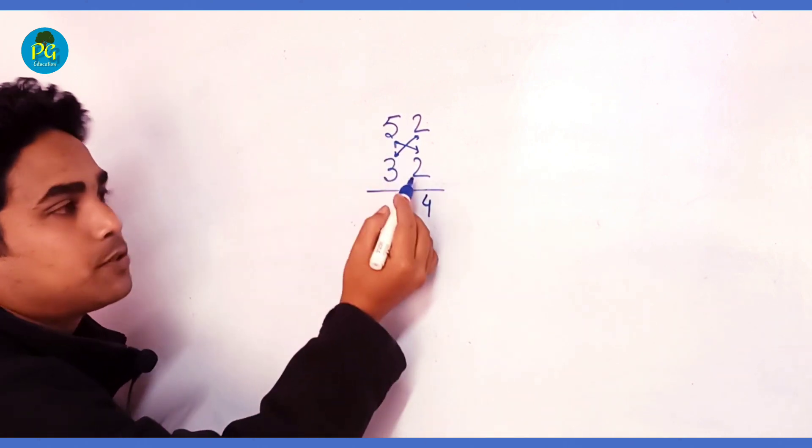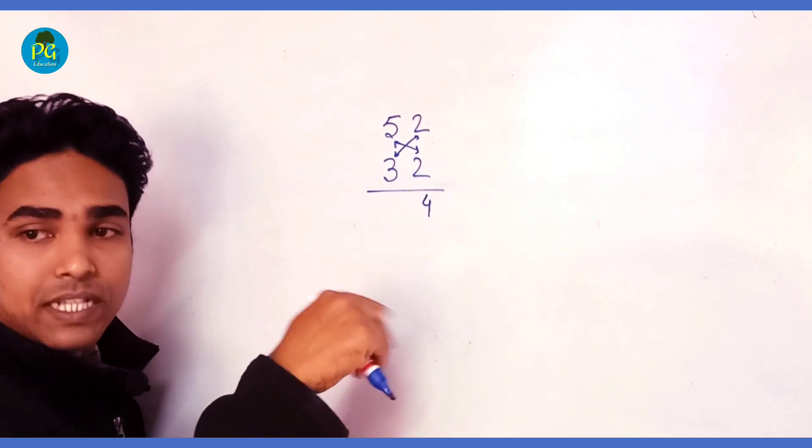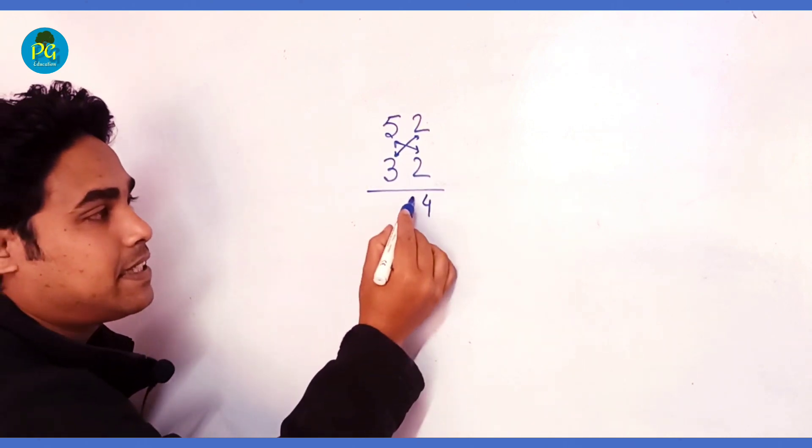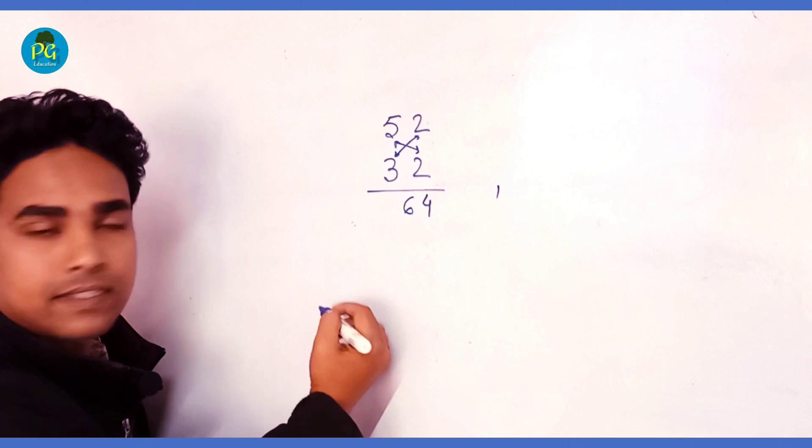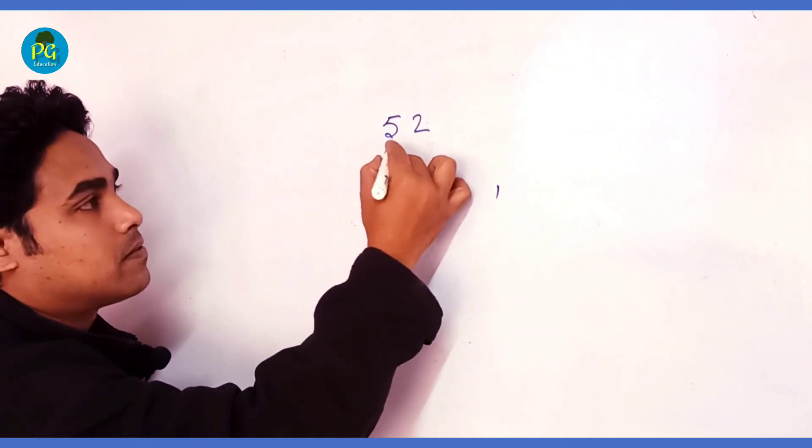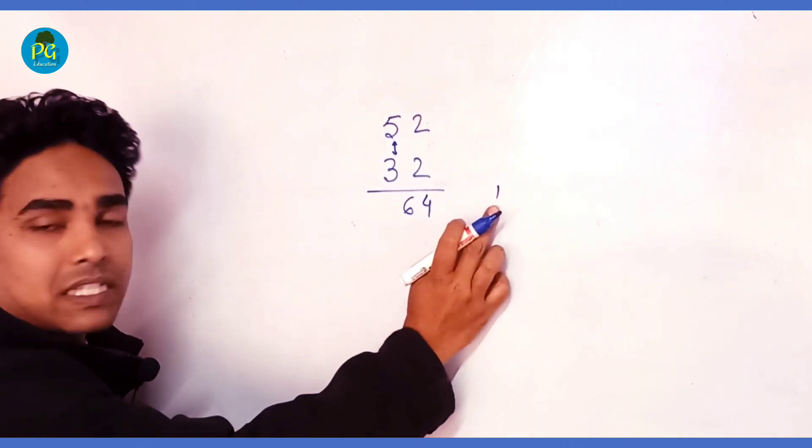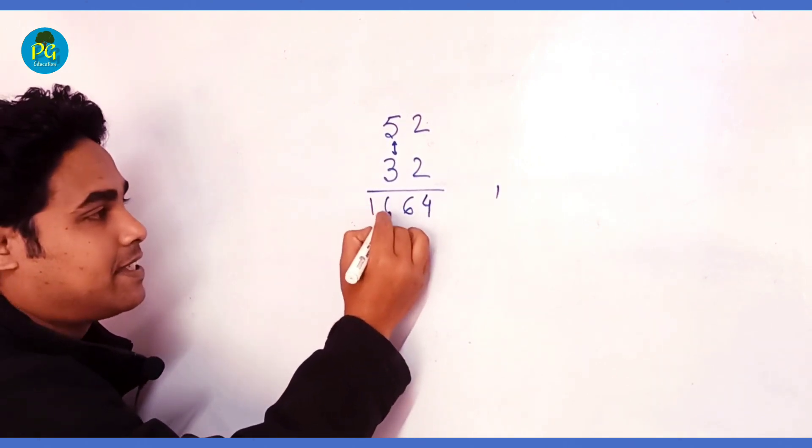So 5 times 2 is 10 and 3 times 2 is 6. 10 plus 6 is 16. Write 6, 1 in hand. Now we will multiply this two-digit. So here 5 times 3 is 15 plus 1, and this is our required answer.